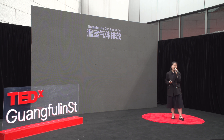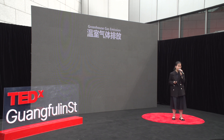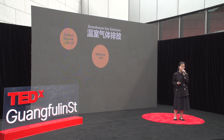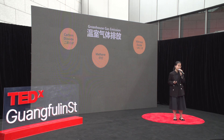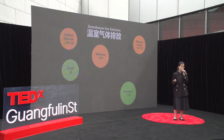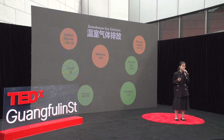Let us examine the causes of global warming in more detail. Global warming is caused by human activities. These activities primarily involve the emission of greenhouse gases, such as carbon dioxide, methane, and nitrous oxide, and these gases trap heat in the atmosphere. The primary sources of these gases are the burning of fossil fuels like coal, oil, and natural gas to produce electricity, heat buildings, and fuel transportation. Deforestation and land use changes are also significant contributors to greenhouse gas emissions.